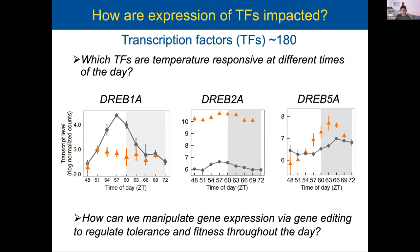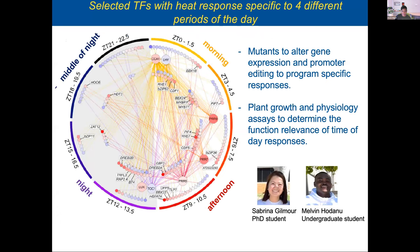We're trying to use this information to see whether we can select targets within transcription factor subfamilies to see which might be responsible for a particular response depending on the time of day. This is a huge project with many different candidates. A great PhD student, Sabrina Gilmore, and an undergraduate student are going through a series of manipulations through publicly available mutant lines and CRISPR editing to figure out the contribution of these genes. We have candidates selected for four different periods throughout the day: morning, afternoon, night, and midday.